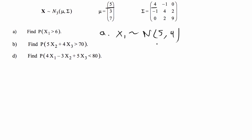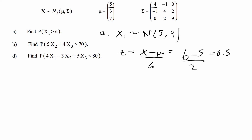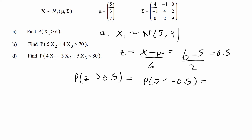We know that x1 is normally distributed with mean 5 and variance 4. The formula for a z-score is x minus mu over the standard deviation, so that's x minus 5 over the square root of 4, which is 2. For x greater than 6, that gives us a z-score of 0.5. Using symmetry on the lower-tail table, the probability z is less than negative 0.5 is 0.3085, and that's the answer for part a.